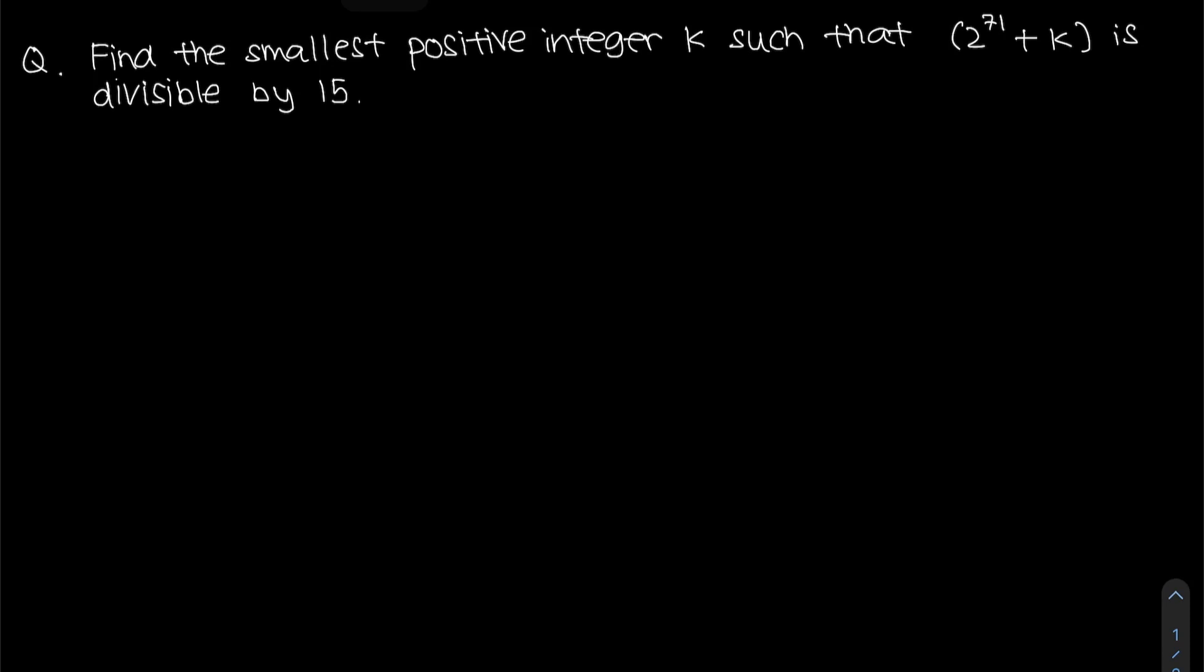The question wants you to find the smallest positive integer k such that 2 to the power of 71 plus k is divisible by 15. So what do we know? For you to use modulus, the best is if you get 1 or minus 1.